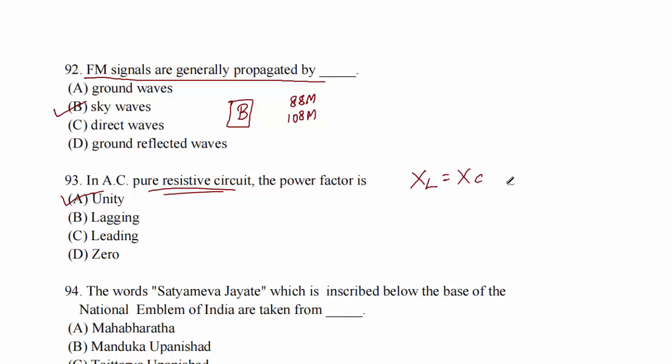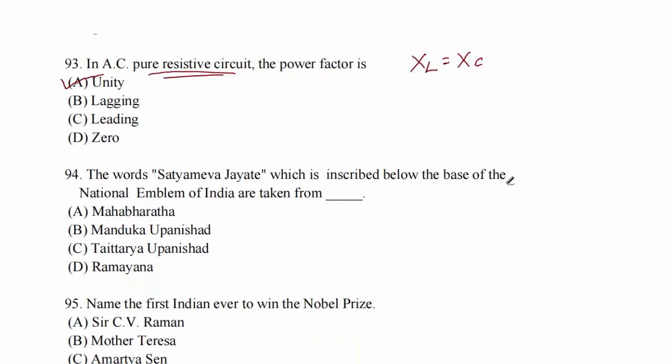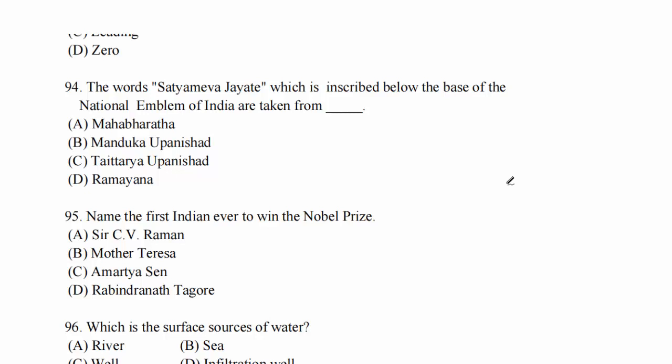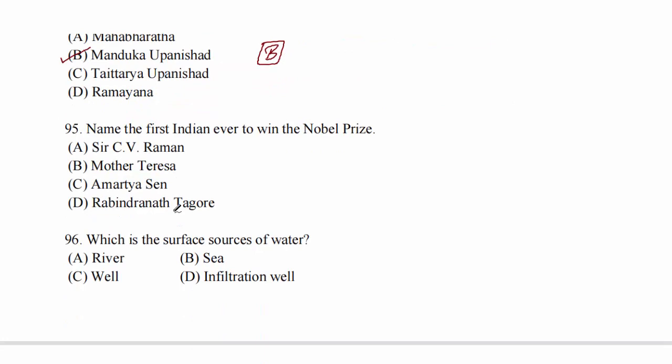Question 94: the words 'Satyameva Jayate' inscribed below the base of the national emblem of India are taken from Mahabharata, Manduka Upanishad, Taittiriya Upanishad, or Ramayana? It is from Manduka Upanishad. Option B.